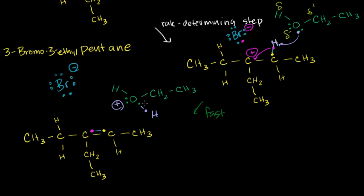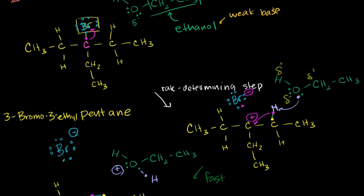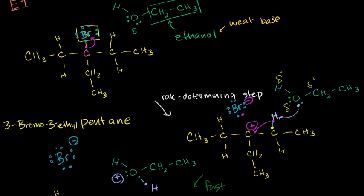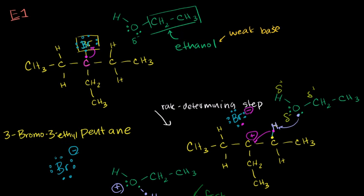We had a weak base and a good leaving group, a tertiary carbon, and the leaving group left. We only had one of the reactants involved. It was eliminated. And then once it was eliminated, then the weak base was able to take a hydrogen off of this molecule. And that allowed this molecule to become an alkene, formed a double bond. This is called an E1 reaction. E for elimination, in this case of the halide, one, because the rate determining step only involved one of the molecules. It did not involve the weak base.